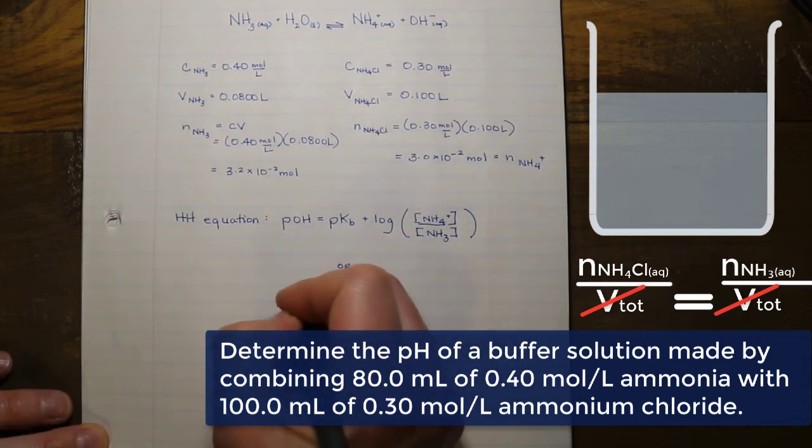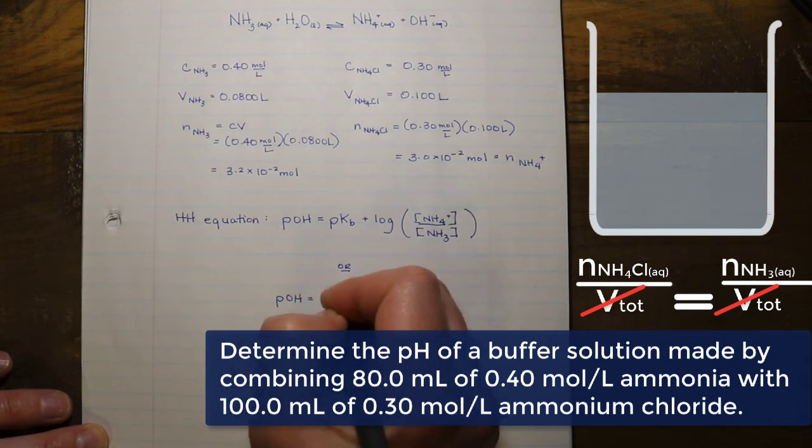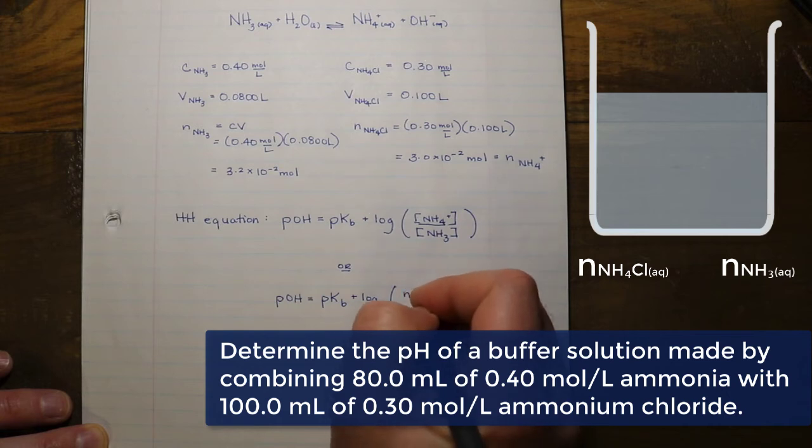So if we take a look at this now, this is a representation of the Henderson-Hasselbalch equation that only requires us to know the number of moles. As a result, we can use this representation to help us figure out what the pOH is going to be.